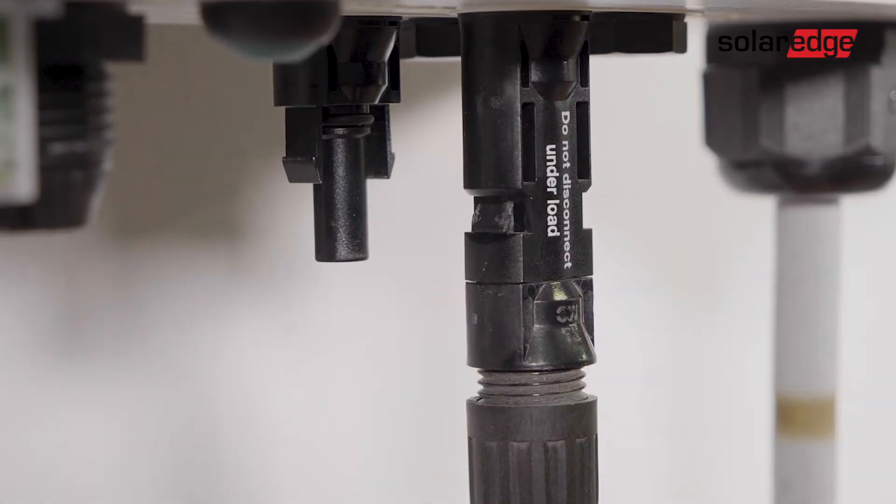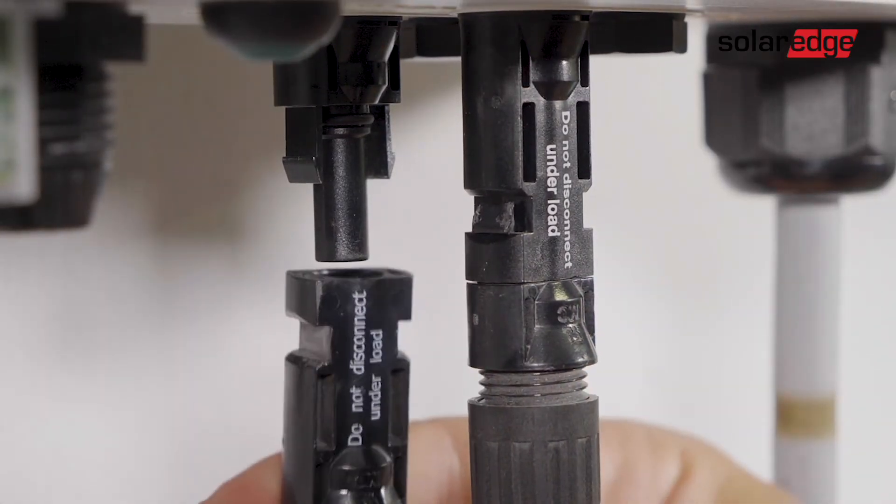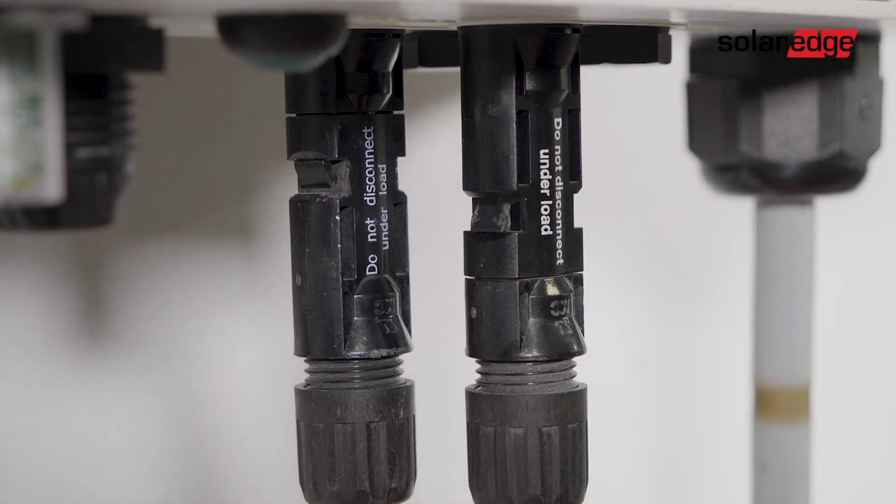Next, we connect the DC connectors of each string to the DC plus and DC minus connectors according to the labels on the connection unit. Verify that the connectors are firmly inserted and locked.